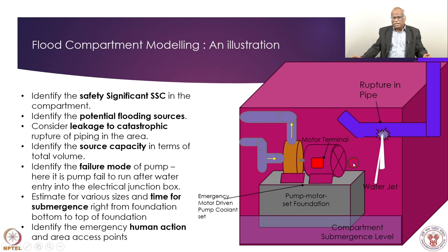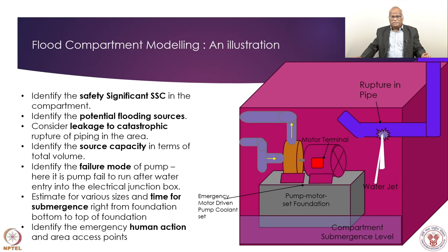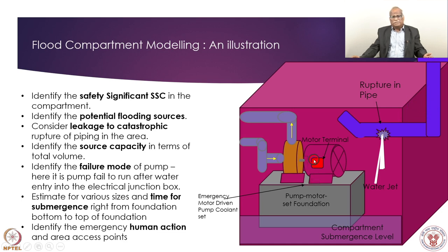These pipes are normally sturdy and do not fail, but PRA is about postulation. If the pipe fails, water should not reach the junction box or bearing shaft level — this is how we model the threat and how to handle this scenario. Redundant pumps should be provided in a different area or at a different elevation. There should be a wall that can be closed immediately — perhaps motor-operated. These arrangements exist in the plant, but combinations of failures can lead to such events.